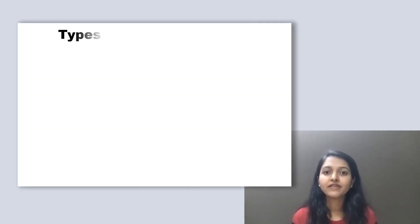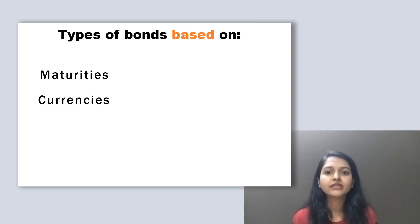Now as per an investor's objective, they can choose to invest in bonds based on different maturities, currencies, different coupons, types of issuers, and many other categories. But in this video, we will particularly see how bonds are classified based on coupons.